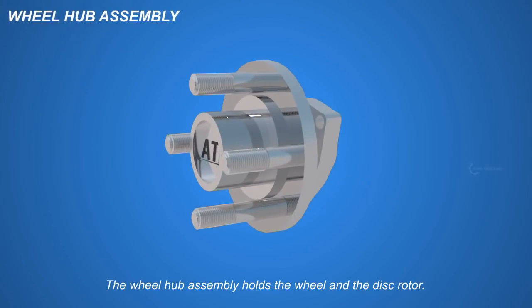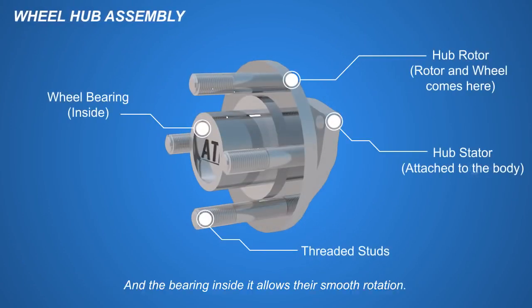The wheel hub assembly holds the wheel and the disc rotor, and the bearing inside it allows their smooth rotation.